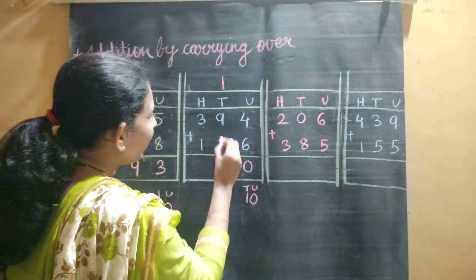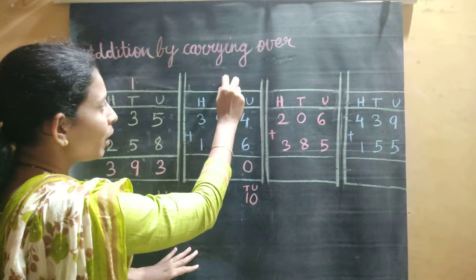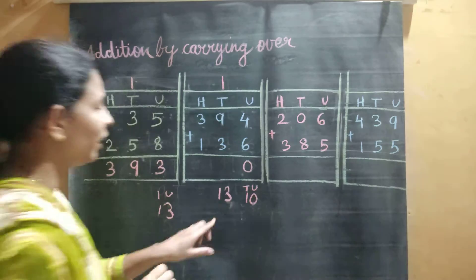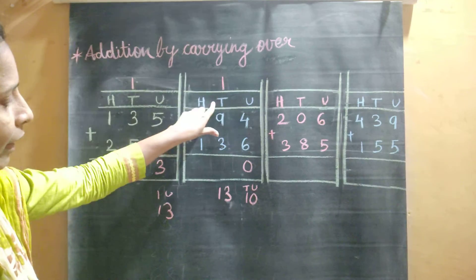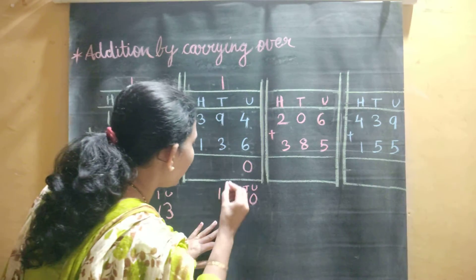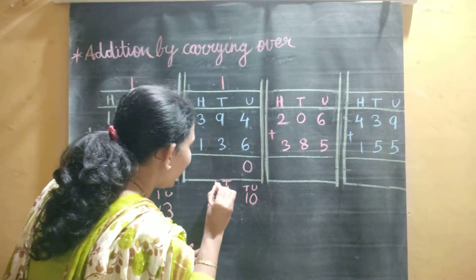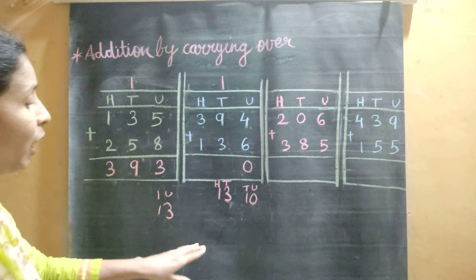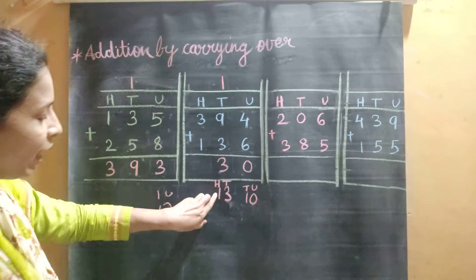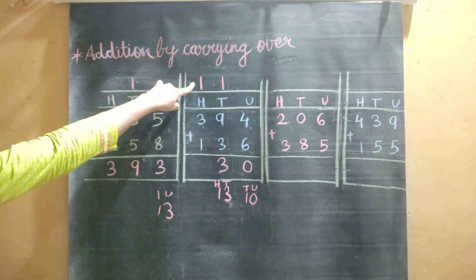Now 9 plus 3 is 12, and 12 plus 1 is 13. We got the answer 13 again. As we learned, 13 tens means 3 at the tens place and 1 at the hundreds place. So that 3 we will write here at the tens place, and we will carry over 1 to the hundreds place.